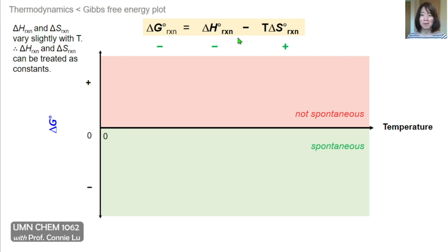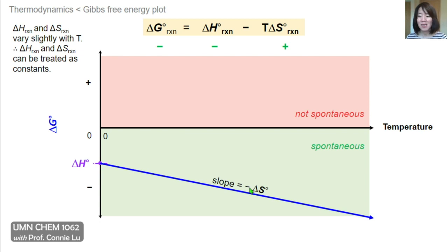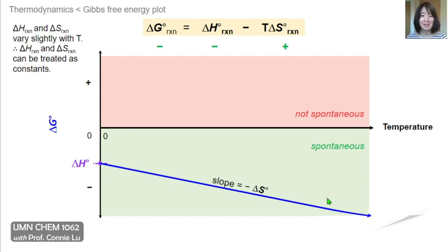In the most favorable scenario where delta H is negative and delta S is positive, delta G can only be negative. In the linear plot, the y-intercept delta H is below zero, and because we're subtracting a positive delta S, the slope of this line is negative. So starting at zero Kelvin, delta G is already negative and spontaneous, and as we increase temperature, delta G becomes increasingly negative. Under these favorable conditions of delta H and delta S, delta G can only be negative and spontaneous.